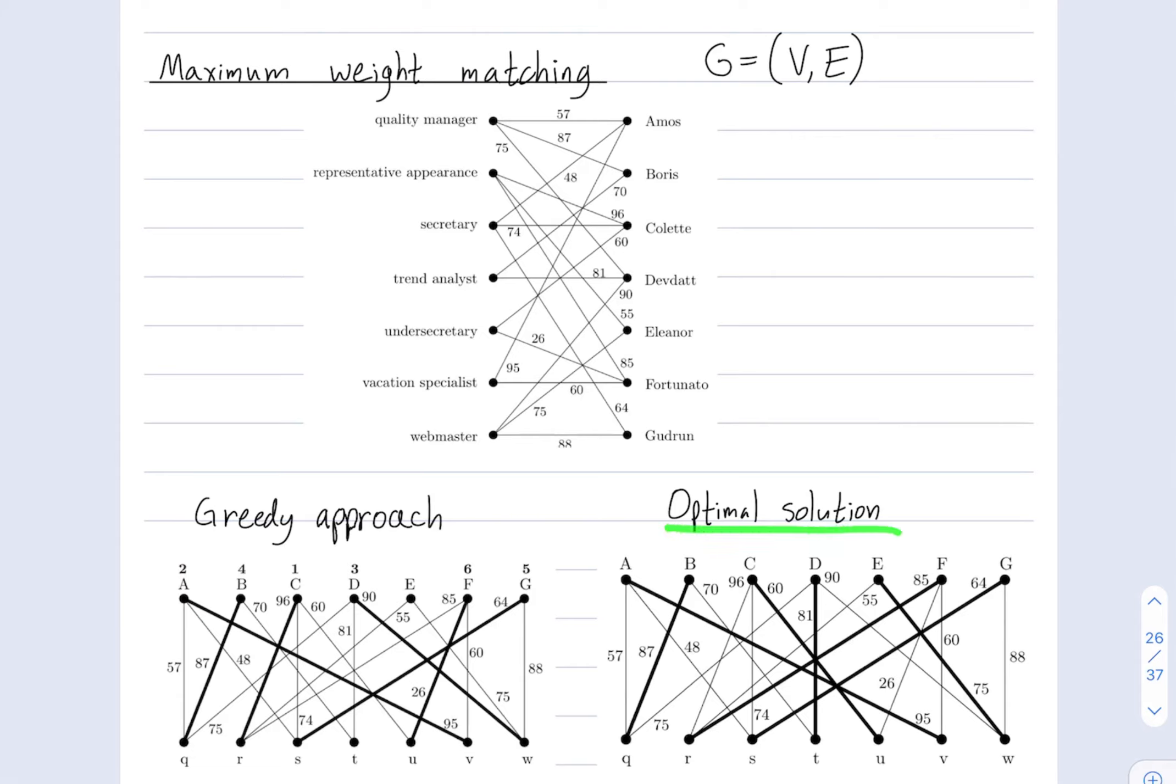Here, on the right, is the optimal solution. So, in the optimal solution, every person is matched to exactly one role. And the total sum of effectiveness is 95 plus 87, etc., is as large as is possible.